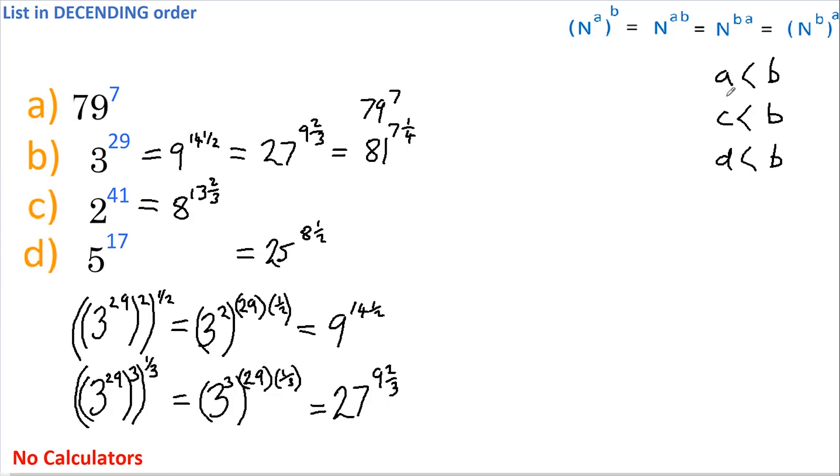Once again, both the base and the power are less than b, so d is less than b. Now, since we proved that a, c, and d are all less than b, we can say that b is the largest.